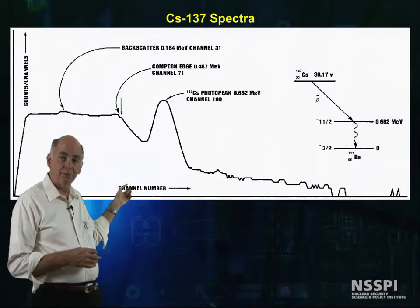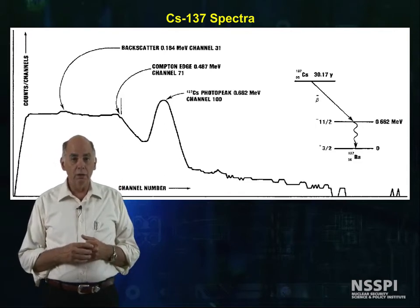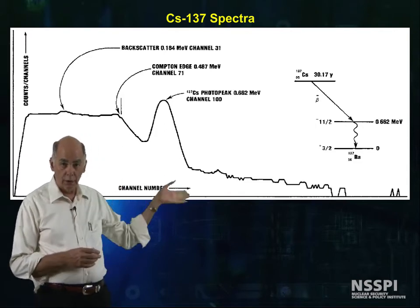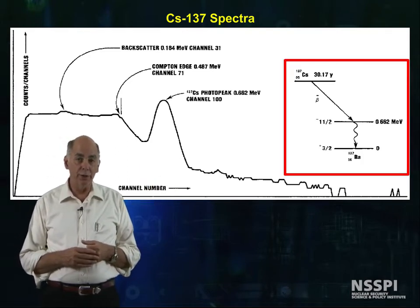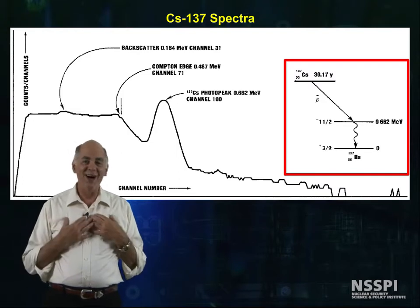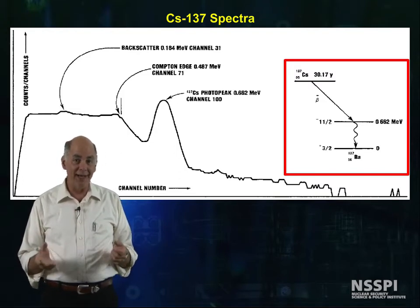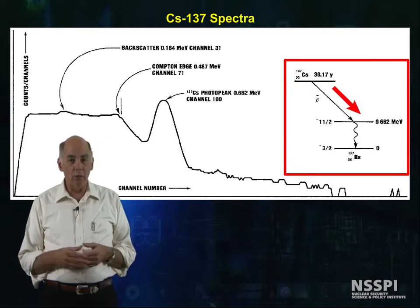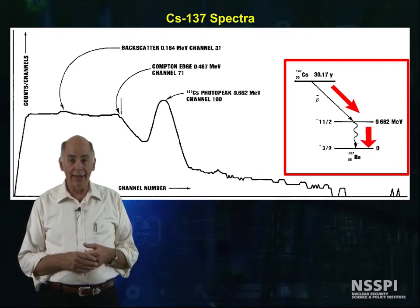Here is a spectrum taken using a sodium iodide detector with a cesium-137 source. On the right is a schematic of the decay scheme for cesium-137. We love cesium because it has about the simplest decay scheme of any isotope. Cesium beta decays to barium-137 metastable, which then emits a single 662 keV photon.